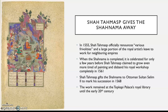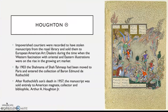Shah Tahmasp gifted the Shahnama to Ottoman Sultan Selim II to mark his succession — Selim II being the son of the sultan who had signed the Treaty of Amasya with Shah Tahmasp. From there, the Shahnama of Tahmasp was held in the Ottoman royal library until around the 20th century.